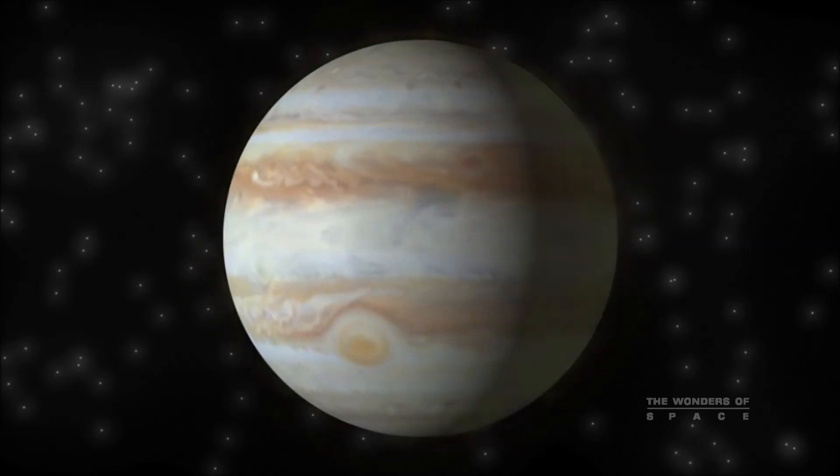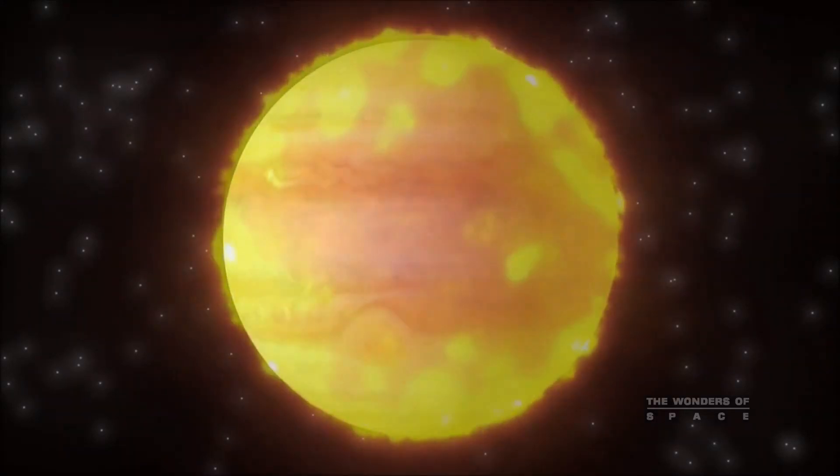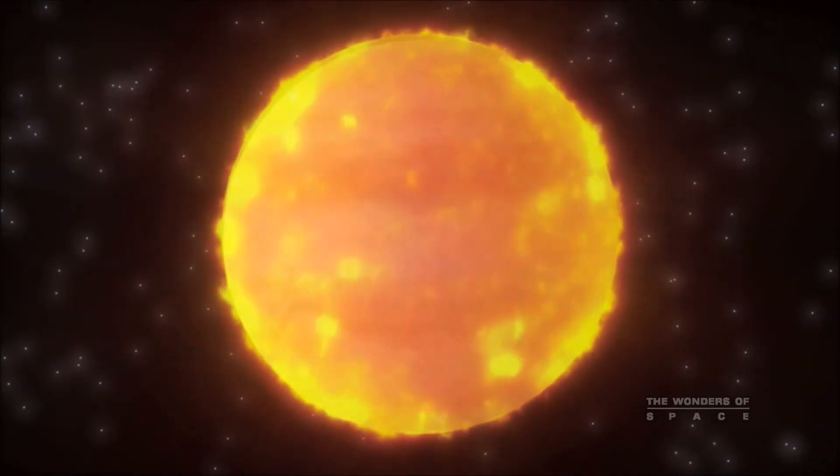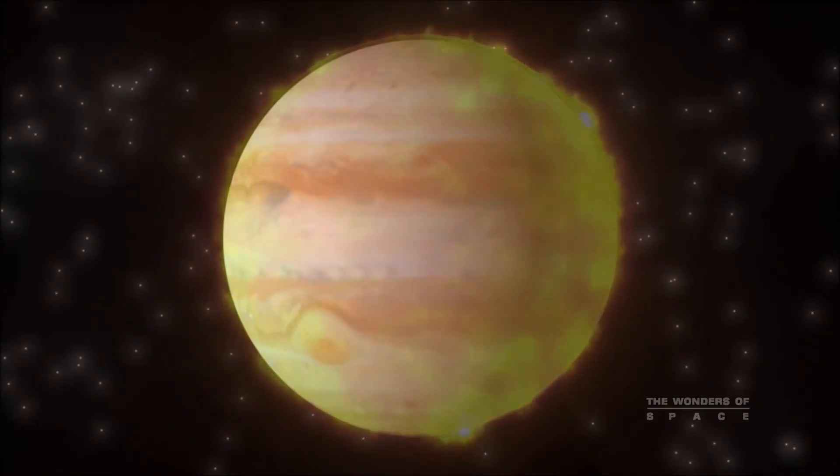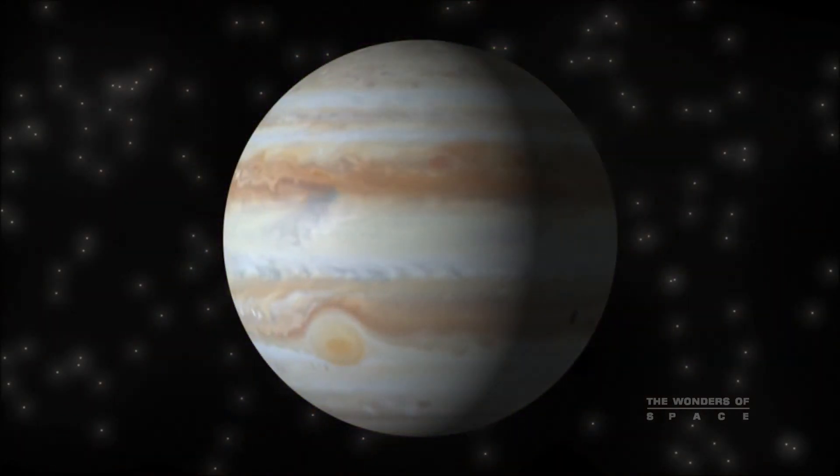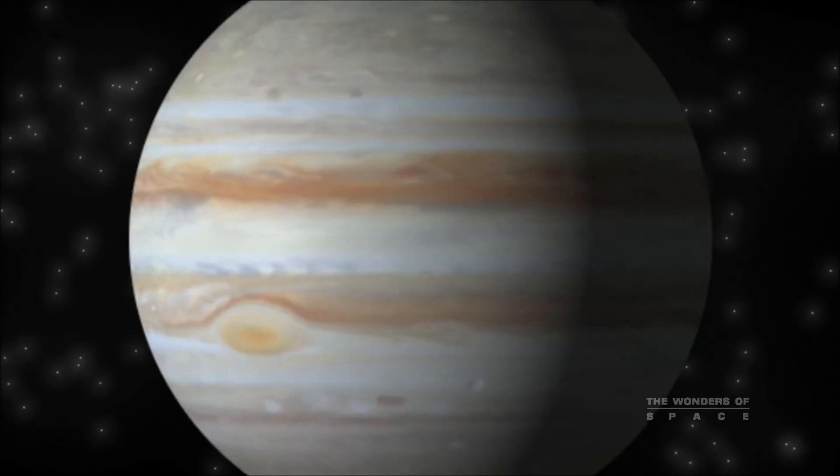Jupiter is huge. If it had only been a little larger, it could have become a brown dwarf star circling our Sun. It is a gas giant and has no solid surface. Its atmosphere forms bands of poisonous clouds that circle the planet in opposite directions.